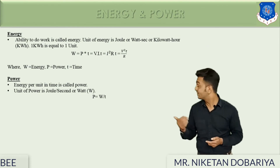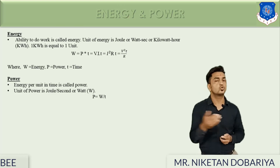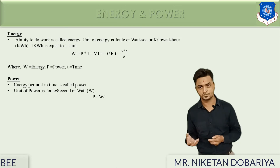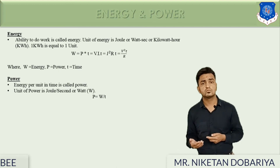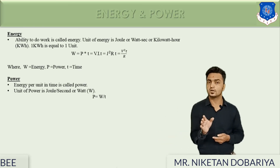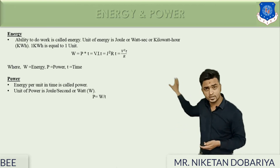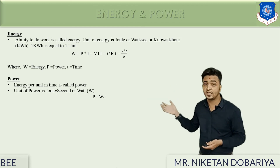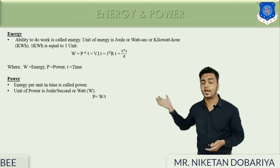The next definition is energy. Energy is the ability of any body to do work. Energy can be defined in joules or in the form of power multiplied by time. Putting in the value of power gives us V·I·T, or I²RT, or V²/R·T. These are the various equations of energy.